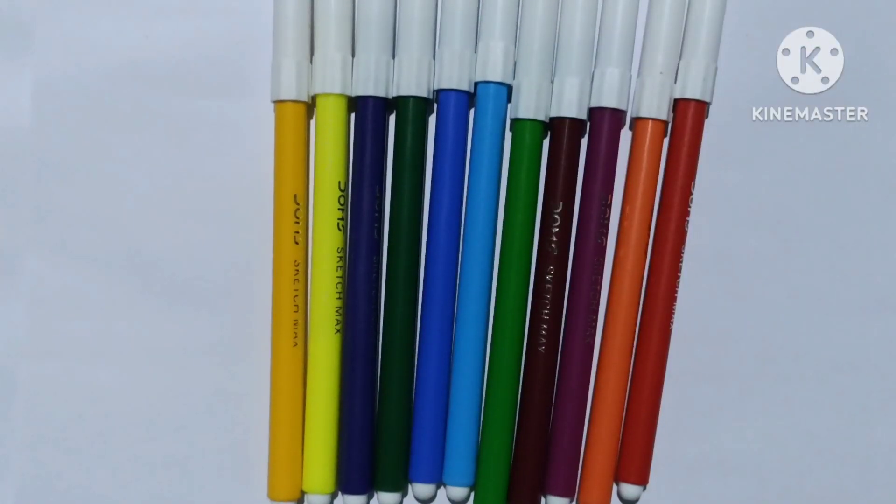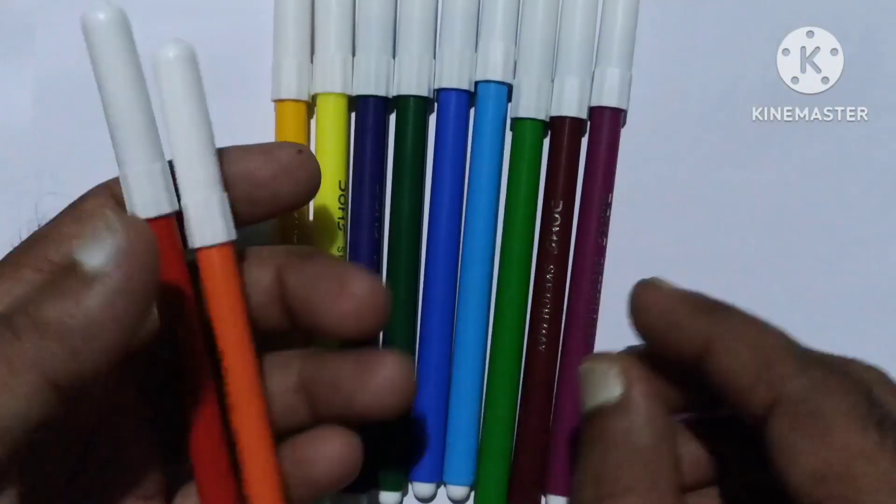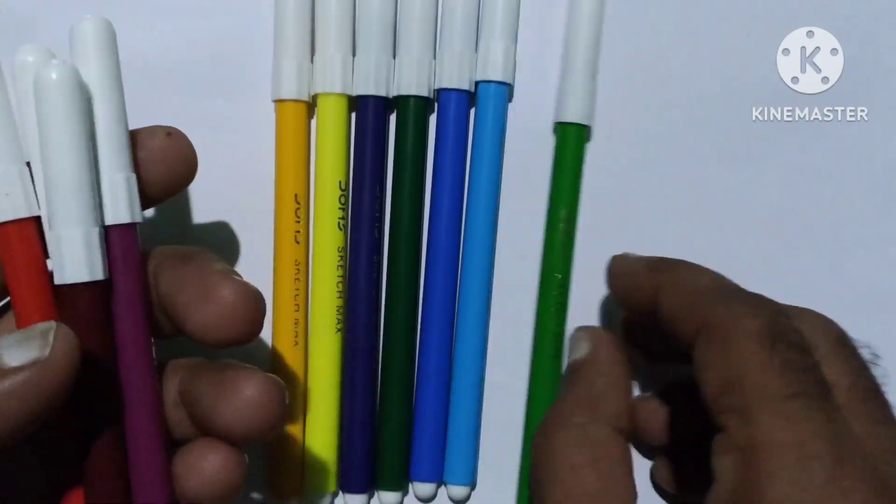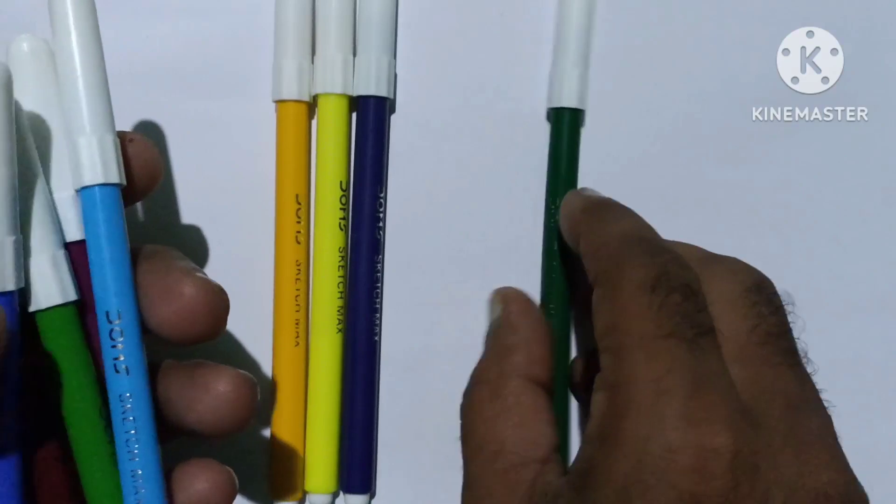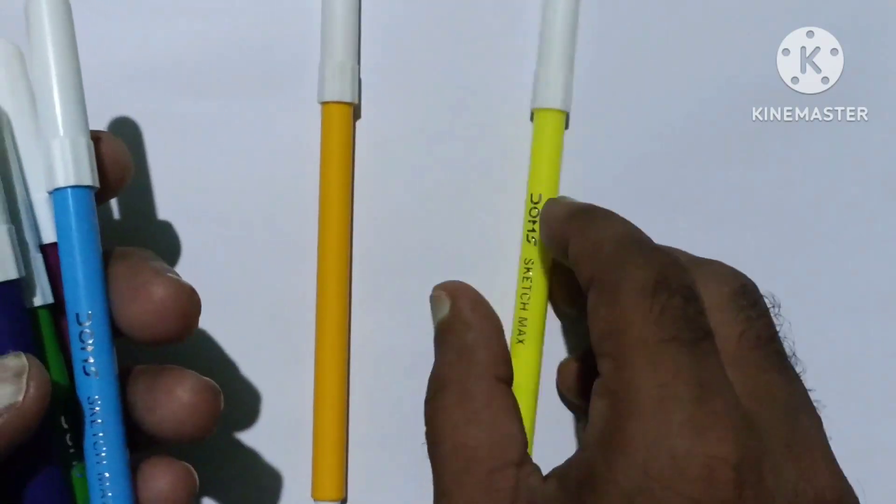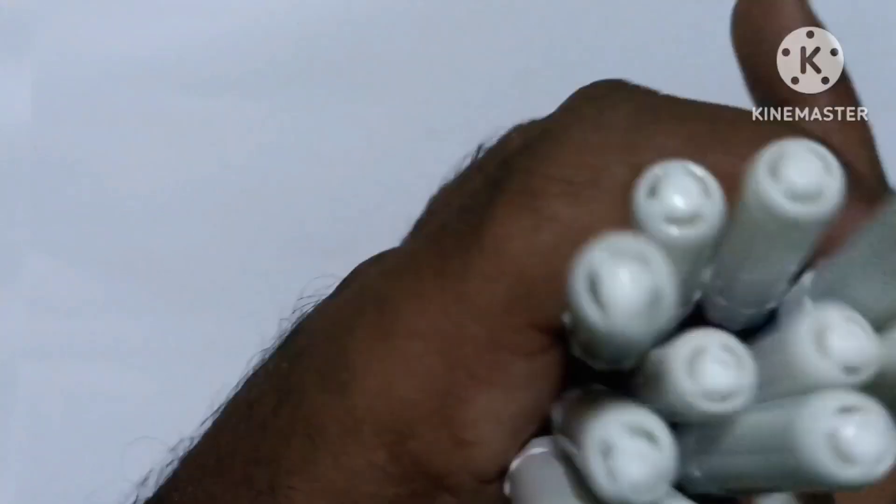Hello, let's learn some colors. Red color, orange color, pink color, brown color, green color, sky blue color, blue color, forest green color, purple color, yellow green color, deep yellow color.